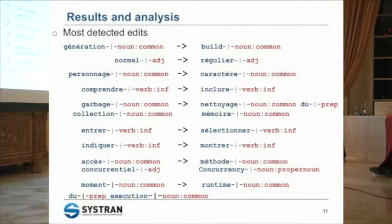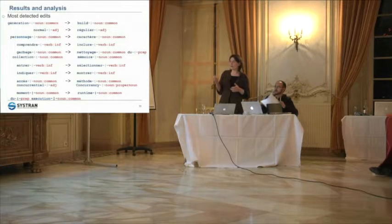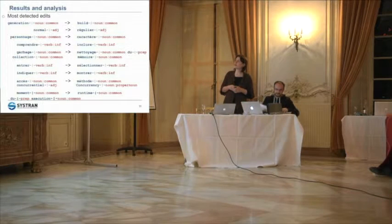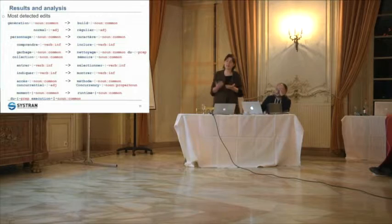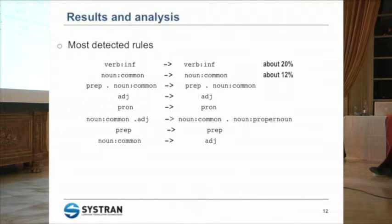Here are examples of the most detected edits. The lemma and part-of-speech annotation is shown in blue, with the lemma and part of speech in red. The top four are really simple rules and are more about lexical choices in the computer science domain — for example, using 'build' rather than 'generation'. The most detected rules show that verbs and nouns are the most frequent categories.